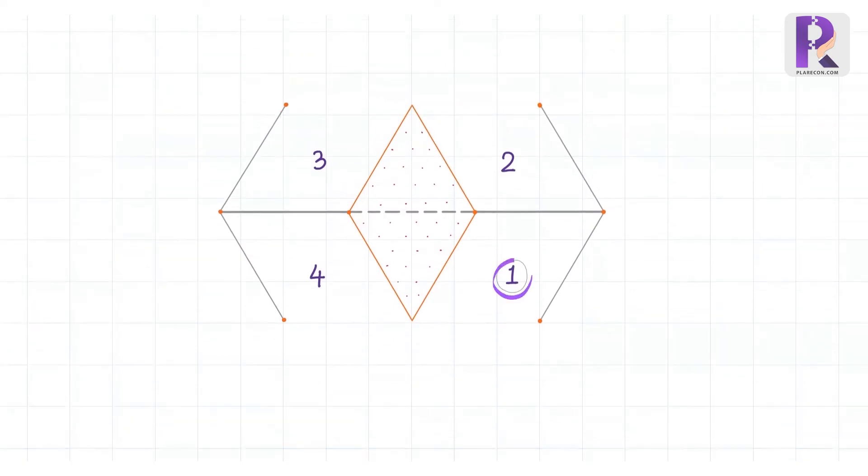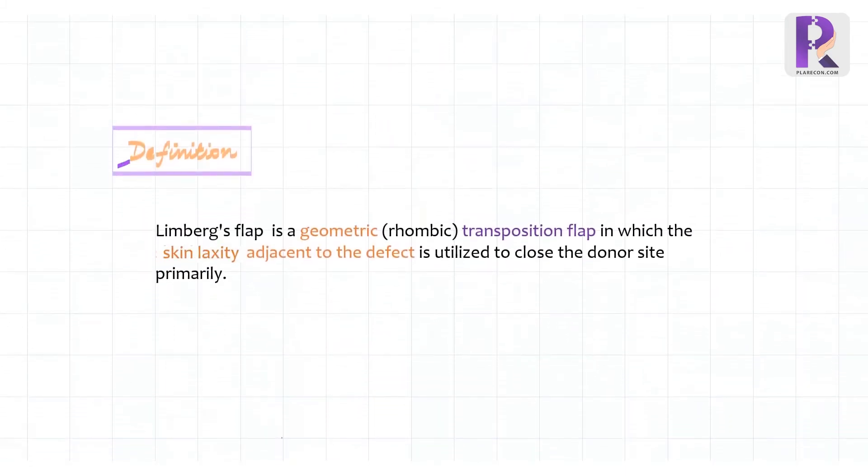Similar to the flap demonstrated above on the right inferior aspect of the short diagonal of the rhombus, there can be another flap superiorly and another two flaps on the opposite left side of the short diagonal. That means four rhombic or Limburg flaps can be designed for every rhombic defect. Now how do we decide which one of these four flap options will we choose to cover this defect? Let's revisit the definition of Limburg's flap and try to find an answer.